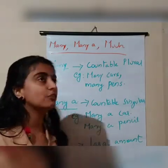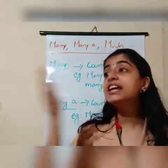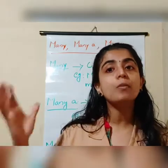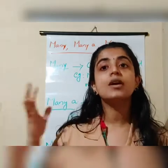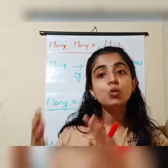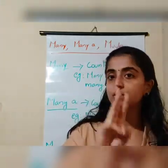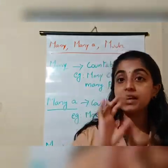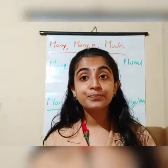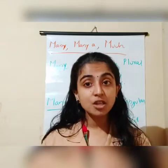Here is another example: Ria has too much money. What does it mean? She is having money in a large amount — that is too much money. Because we cannot say one money, two money, three money — money is an uncountable noun. So: Ria has too much money.